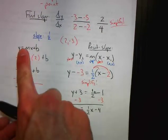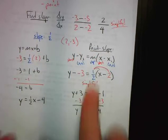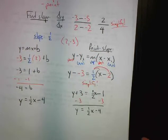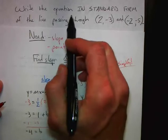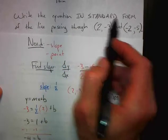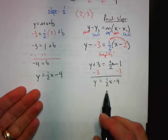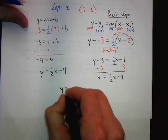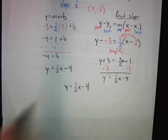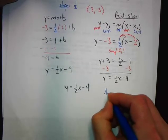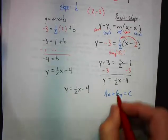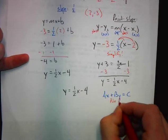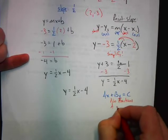We can use either y equals mx plus b or point-slope form — it does not matter which method you use as long as you follow the directions. The directions say to write the equation in standard form. Remember what standard form is: Ax plus By equals C. And remember the two rules for standard form: no fractions, and A must be positive.